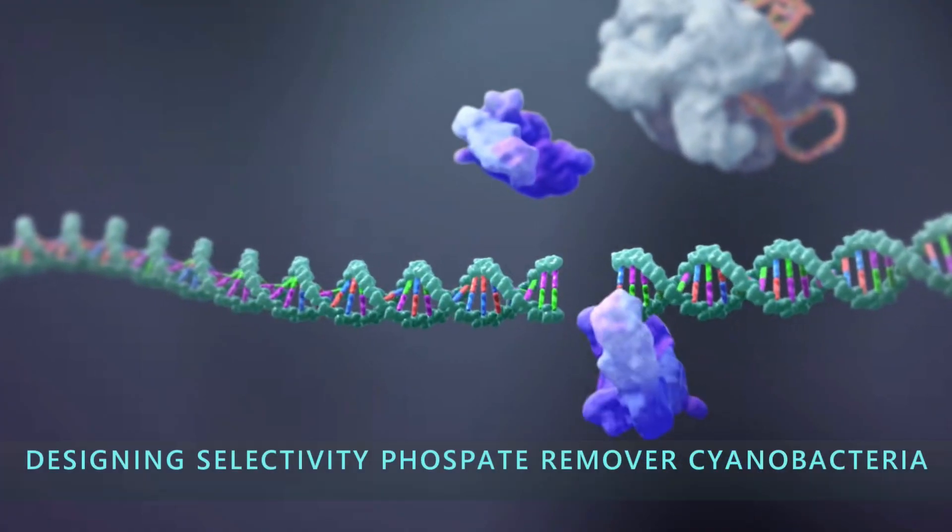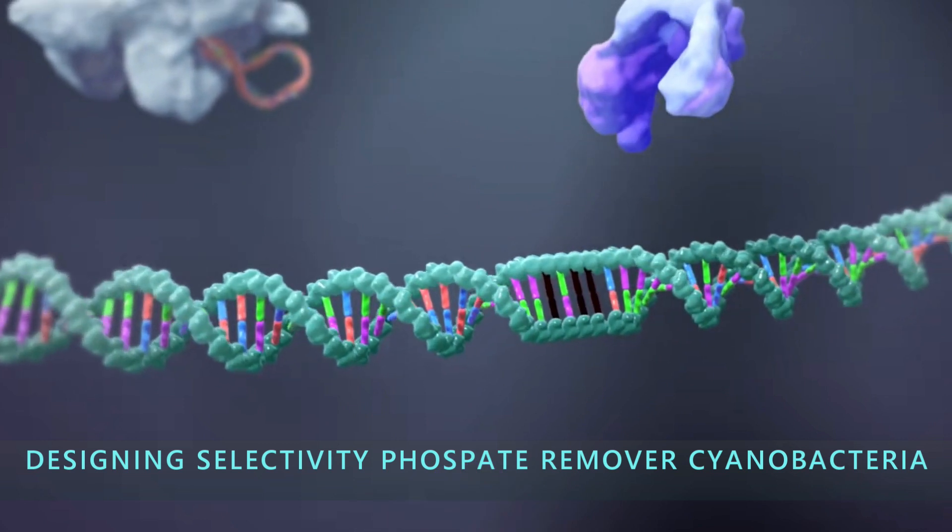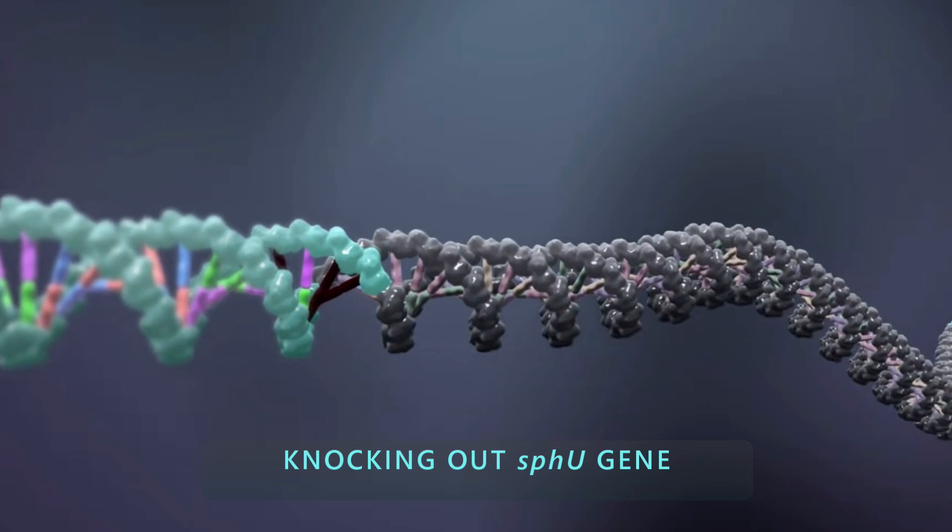This mutant is a selective phosphate remover cyanobacteria. I knock out their sphU genes and compare with local cyanobacteria.